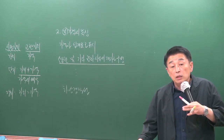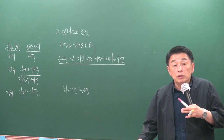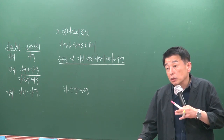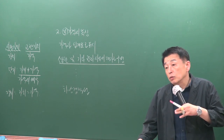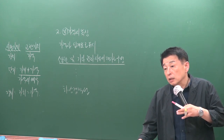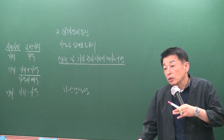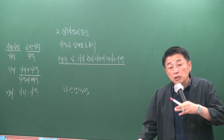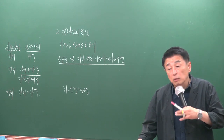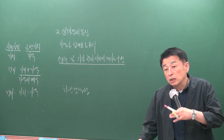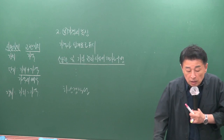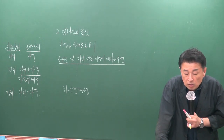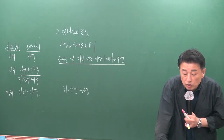가격 다원론에 의할 때 시장 가치로 평가함이 원칙인데, 여러 개의 가격이 성립할 수 있는 것은 부동성이 아니라 용도의 다양성에 기인합니다. 자연 상태의 토지와 농지로 개량했을 때, 택지로 전용했을 때 각각 가치가 달라질 수 있습니다.